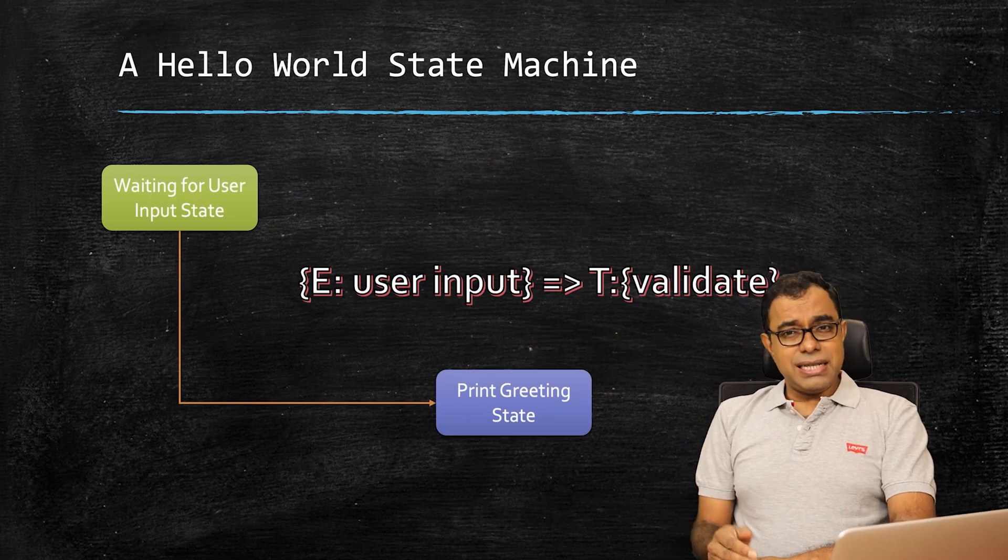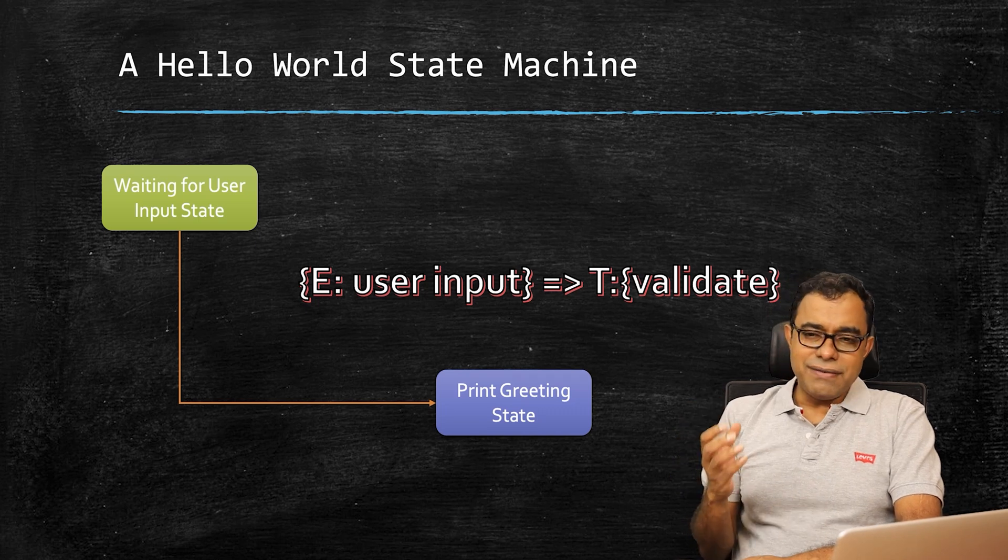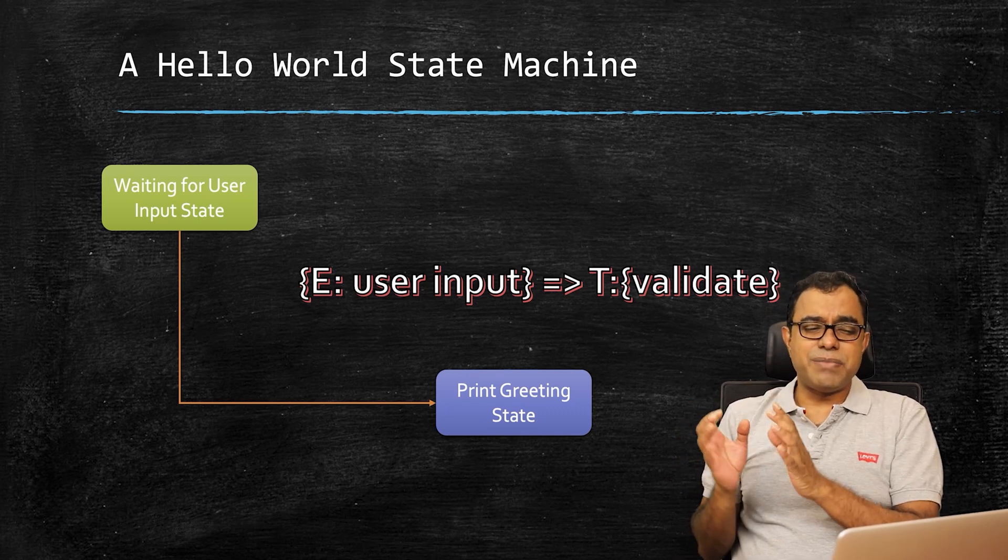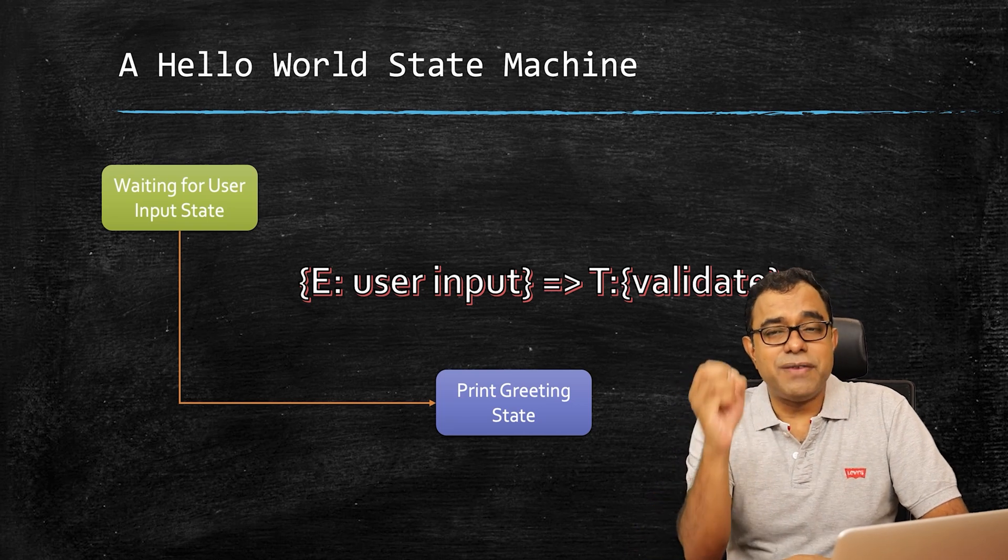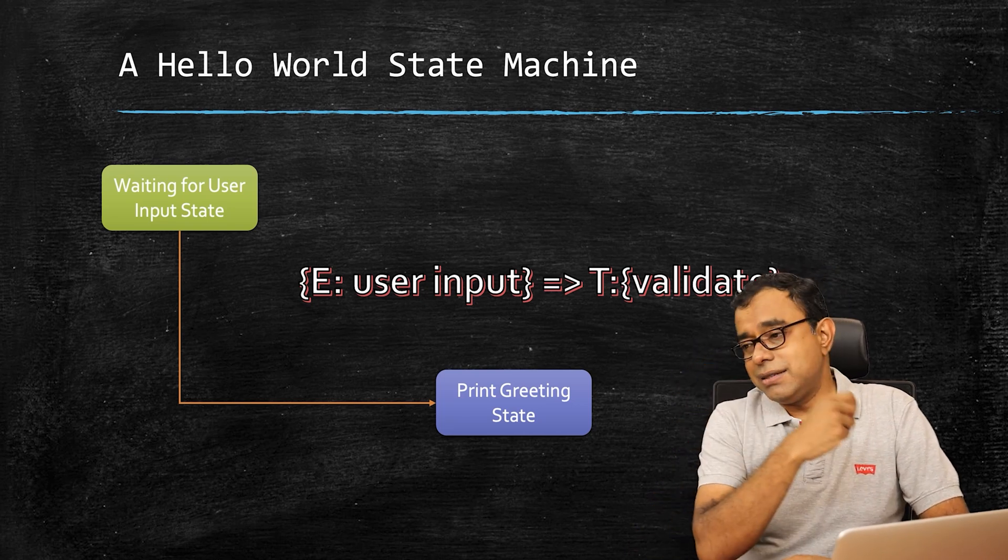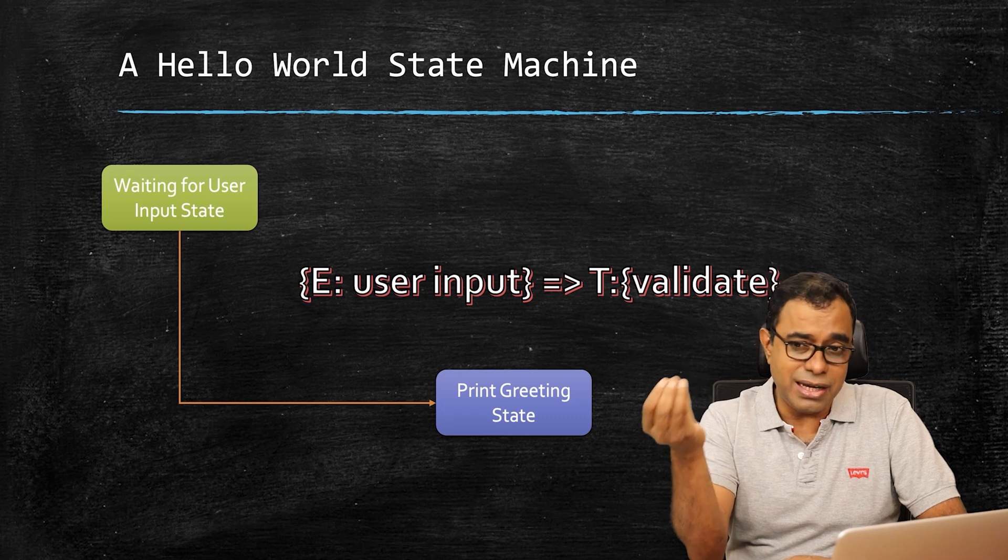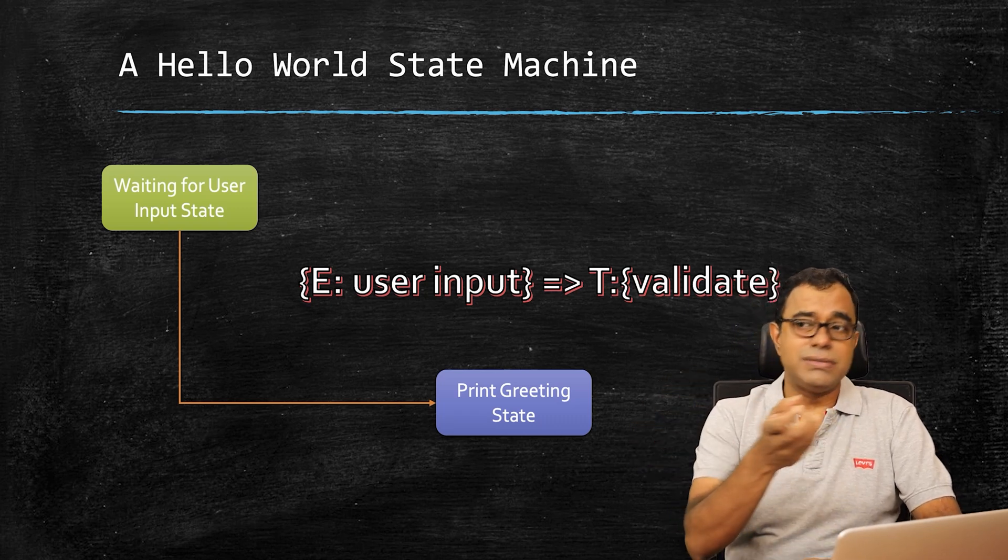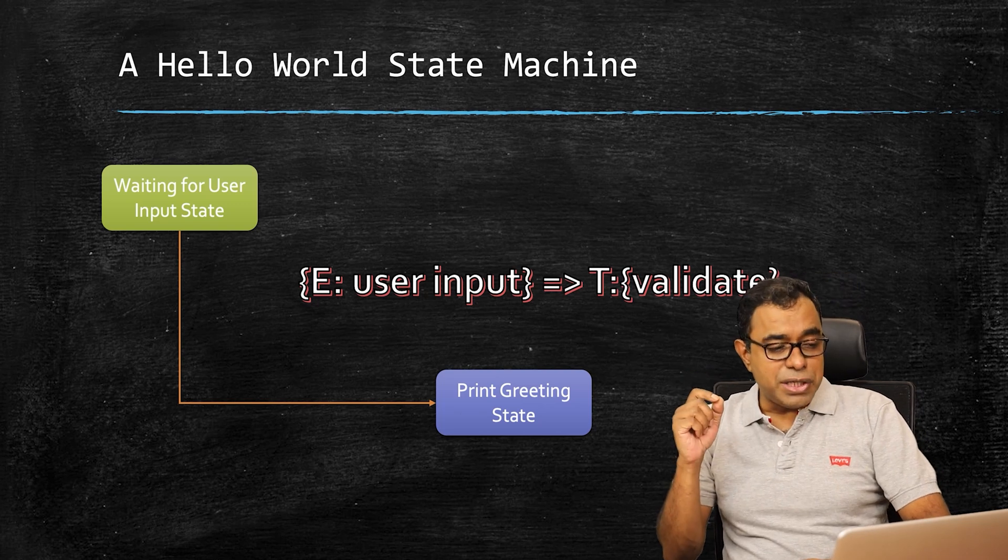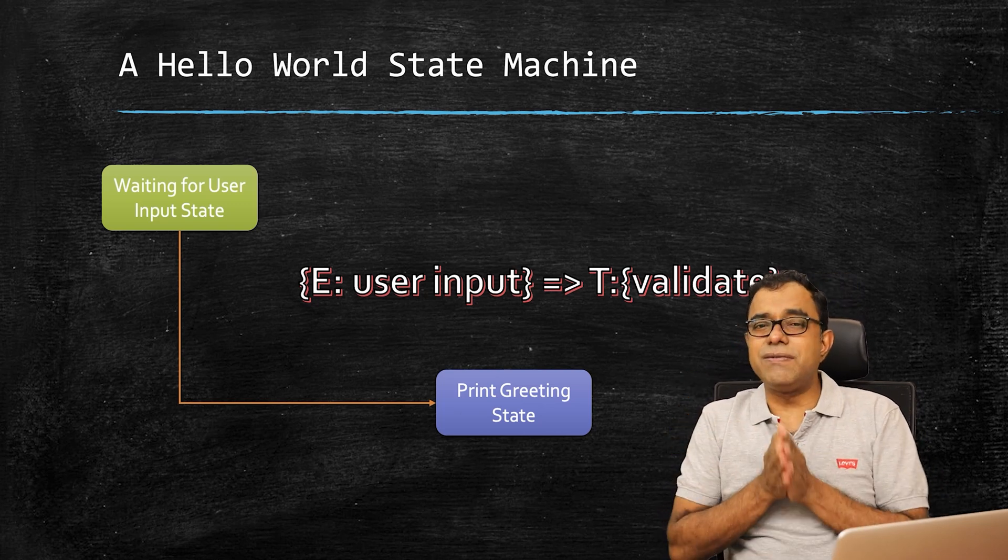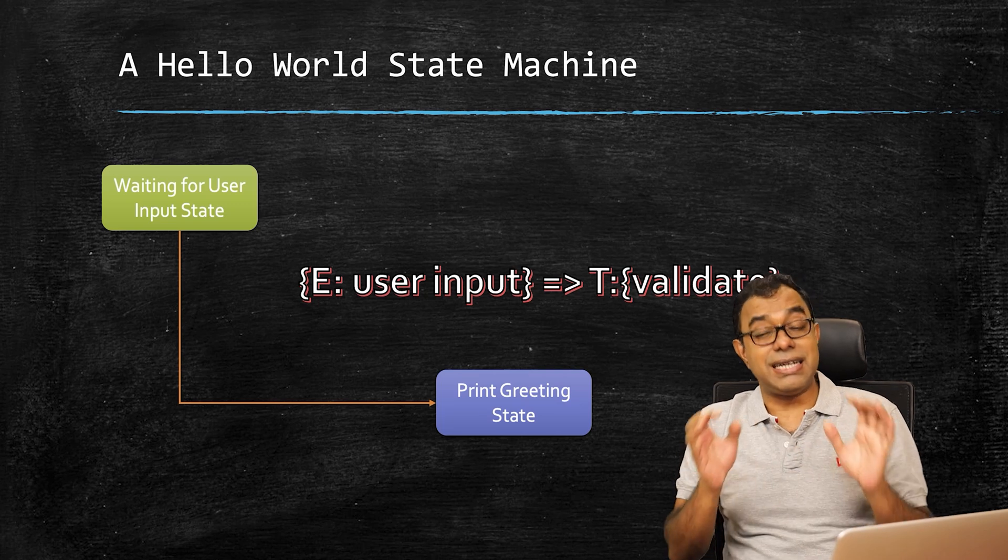So as a customary thing, we learn with hello world. So here is a very simple hello world state machine. It is a very simple example where you type your name and the program will say good morning, good afternoon, or good evening based on the time of the day. So waiting for user input state. When you run your program, it is waiting for user input. It is waiting there. It is a state.